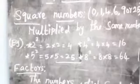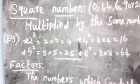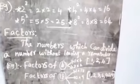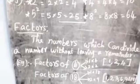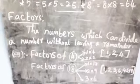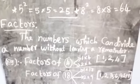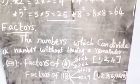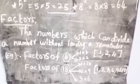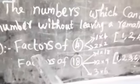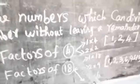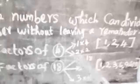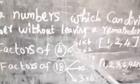That is multiplying by the same number — it is called a square number. Next, factors. A factor is a number which can divide a number without leaving a remainder. You can take any number and divide it by another number without leaving a remainder.